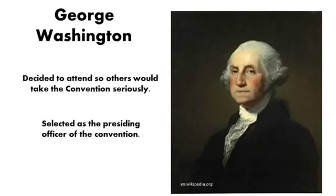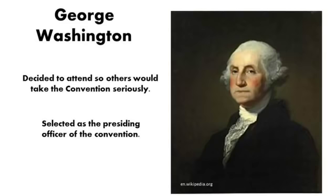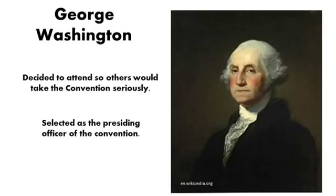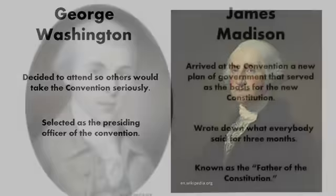One of the most important delegates at the convention was George Washington. He was the most famous, respected, and richest man in the United States. He decided to attend the convention so others would take it seriously — he's kind of like the cool kid at the party. If he's not going to be there, nobody wants to go. On the very first day, he was selected as the convention's presiding officer, or president.